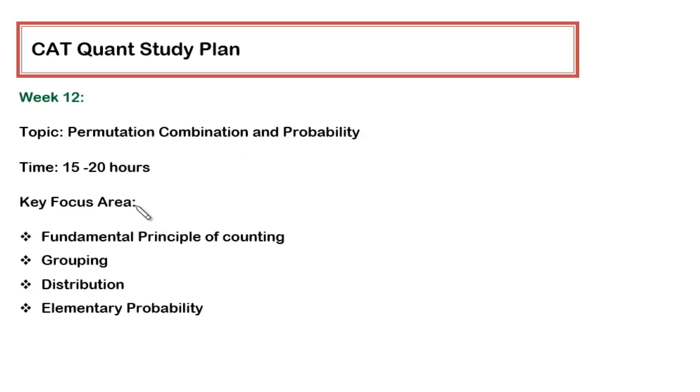Now the time allotted is the same and within this you have to focus on four different subtopics. The very first is the fundamental principle of counting. This is a simple way where the counting is done and we use the rule of multiplication and addition, and we understand where we have to use the multiplication rule and where we have to use addition rule to get to the number of ways wherein a certain thing can be done.